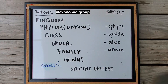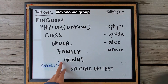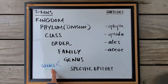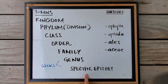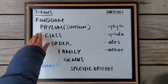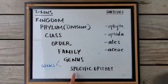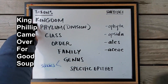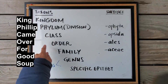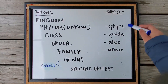The major taxonomic categories are Kingdom, Phylum, Class, Order, Family, Genus, and Specific Epithet. These last two make up the species name. Starting from the top is the most general category, and the bottom is the most exclusive. Phylum can also be called Division. The best way to memorize this order is with a mnemonic: "King Philip Came Over For Good Soup." The first letter of each word corresponds to the first letter of each taxonomic level.